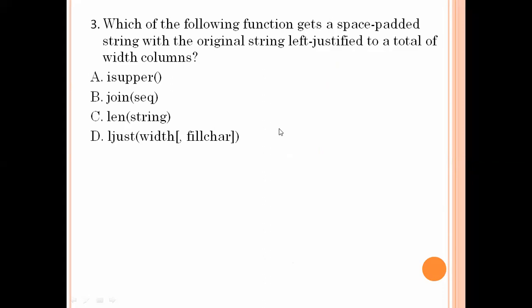Which of the following functions gets a space-padded string with the original string left-justified to a total of a given width of columns? Left justification means ljust — left-side justification with the width and fill characters. So option number D is the right answer.